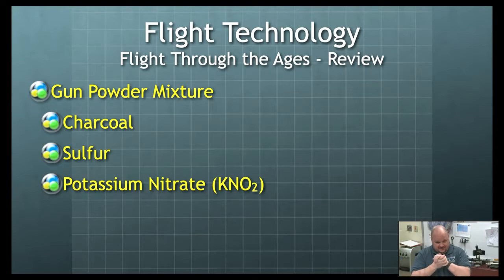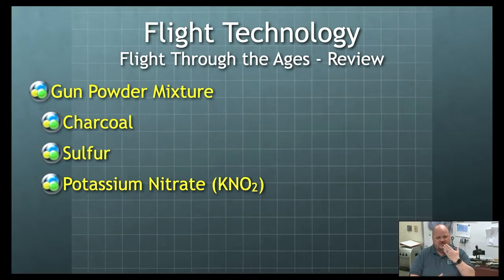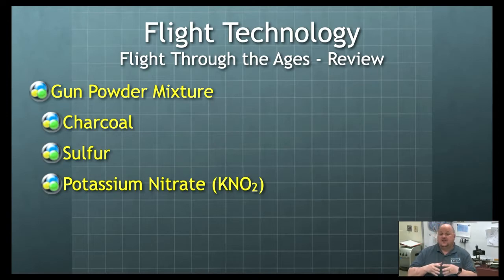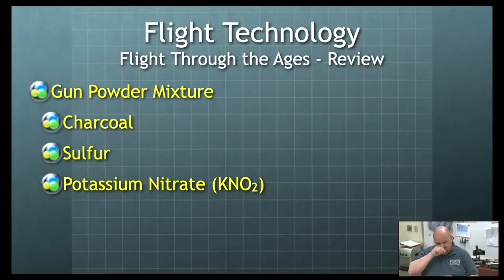Gunpowder with charcoal, sulfur, and potassium nitrate — those are the three things that went into the mixture, and that's the first start of a solid fuel. They ended up using it in fireworks, finding out that you can ignite it and launch things. So this is a solid fuel.